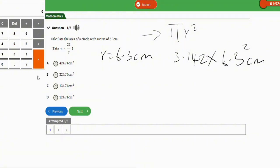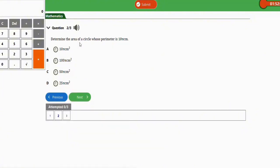All right, so that's it for this question. Let's wipe this now and solve the next repeated question. Okay guys, the next repeated question says determine the area of a circle whose perimeter is 10π cm.